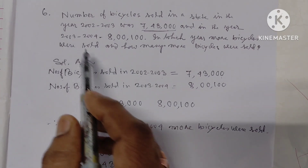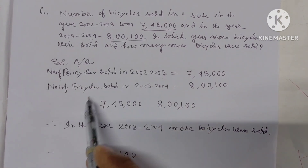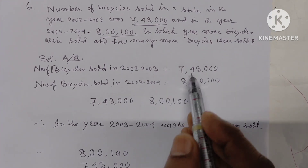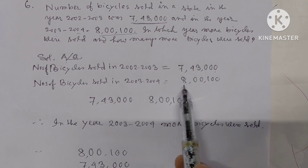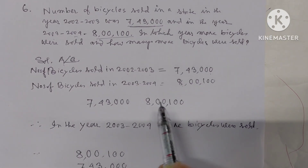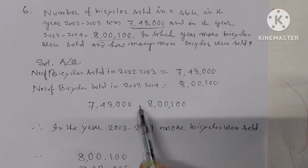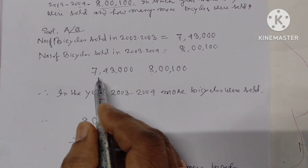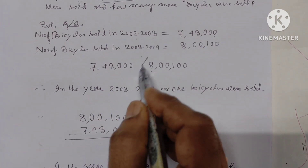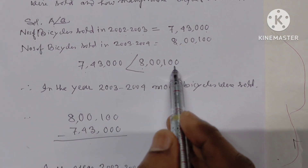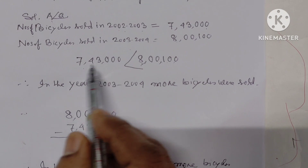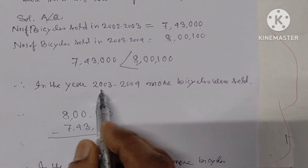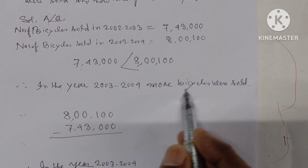In 2003 to 2004, bicycles sold were 8,01,000. If we compare the cycles sold in 2002 to 2003 and 2003 to 2004, then we find that 8,01,000 is greater than 7,43,000. So in 2003 to 2004, more bicycles are sold.